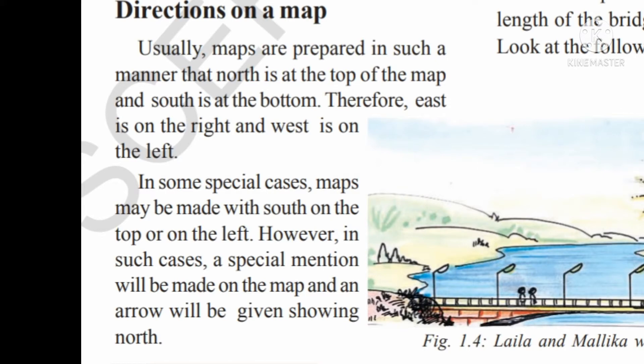Usually maps are prepared in such a manner that north is at the top and south is at the bottom. Therefore, east is on the right and west is on the left. This is the method usually used to make maps.